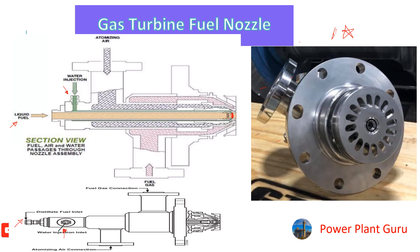After that, the atomizing air — this is the atomizing air inlet in the fuel nozzle. In this drawing, this is the atomizing air port, and this is the next annular space where the atomizing air flows in. At this point, air and fuel both are coming together.